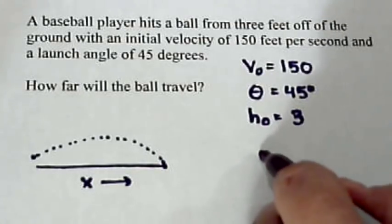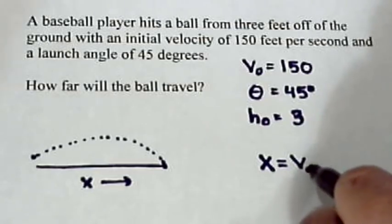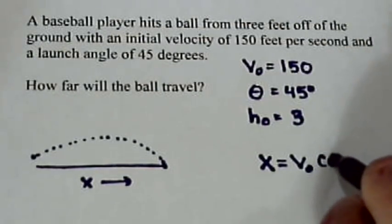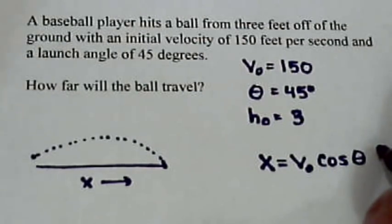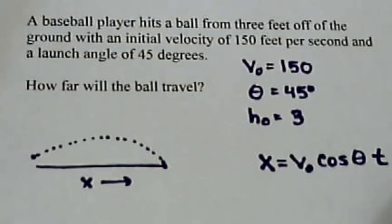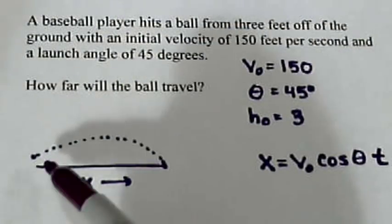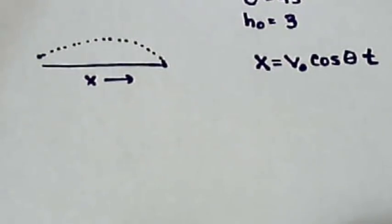Well, the formula is X equals the initial velocity, which we have, cosine theta, which we have, and the time. The problem is we don't have the time. We don't know how long it's going to take to get here. So we've got to find that first.